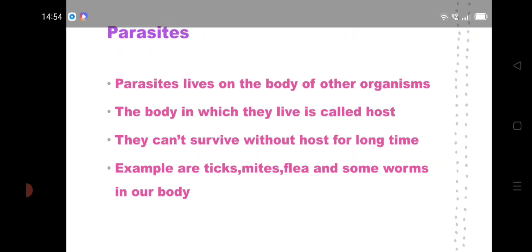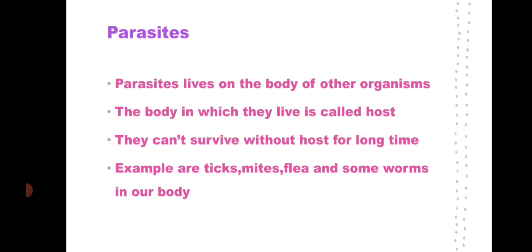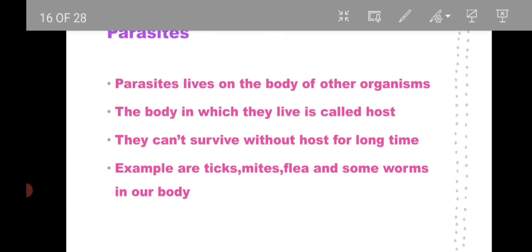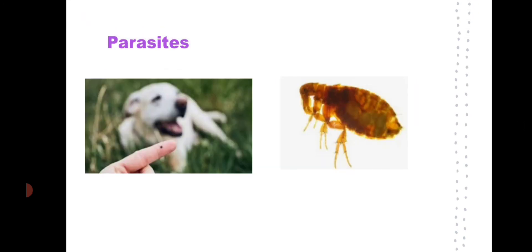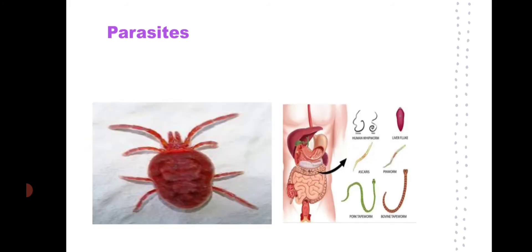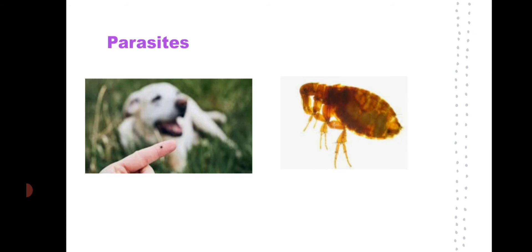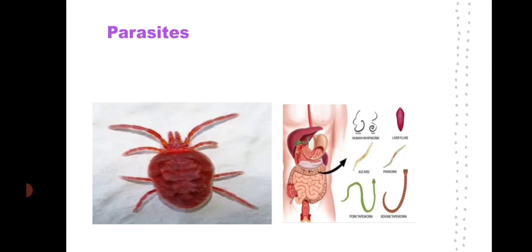Next, parasites cannot live on their own — they live in or on another organism called the host. They can't survive without a host for long. Examples include ticks, mites, fleas, and some worms in our body. They live on domestic animals such as cows, horses, goats, cats, and rabbits, feeding on their blood. If they leave the host, they will die.